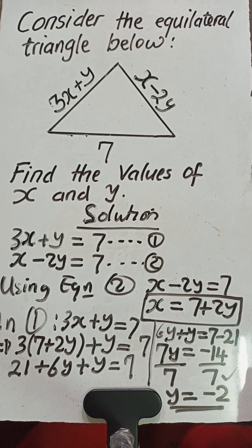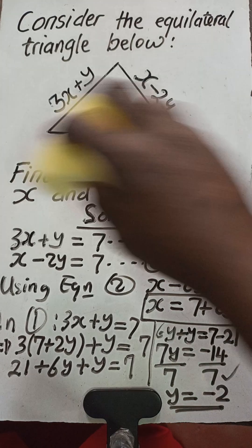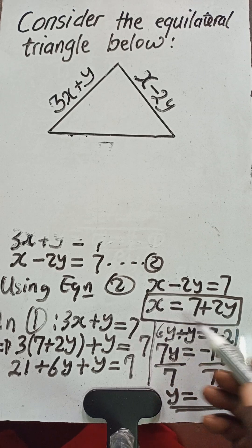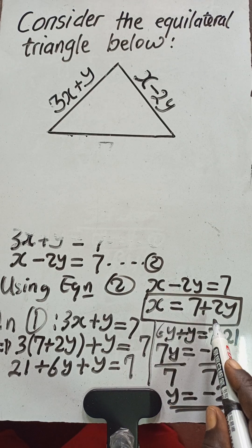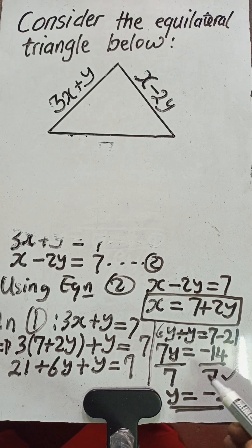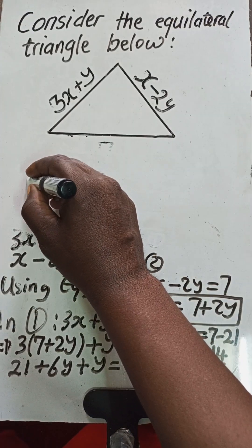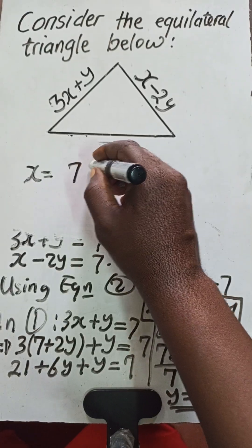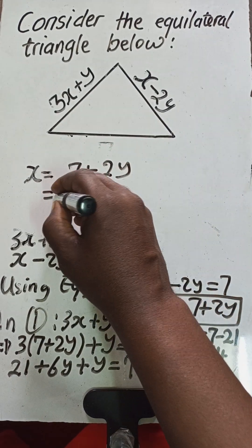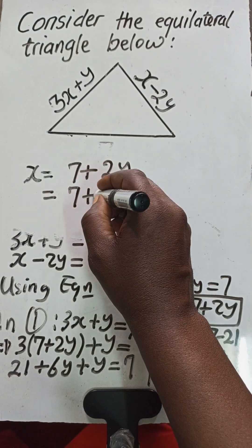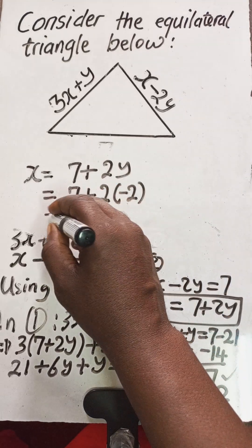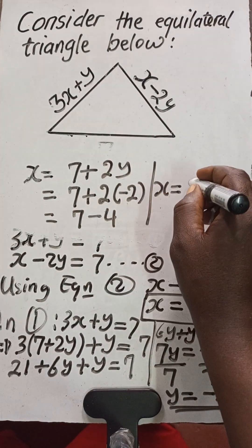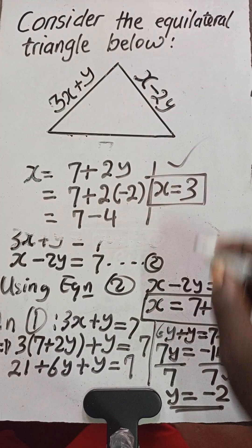Now to get the value for x, we use the expression we had in the box: x equals 7 plus 2y. Since y is negative 2, we have x equals 7 plus 2 times negative 2, which is 7 plus negative 4, giving us x equals 3. So the value of x is 3 and the value of y is negative 2.